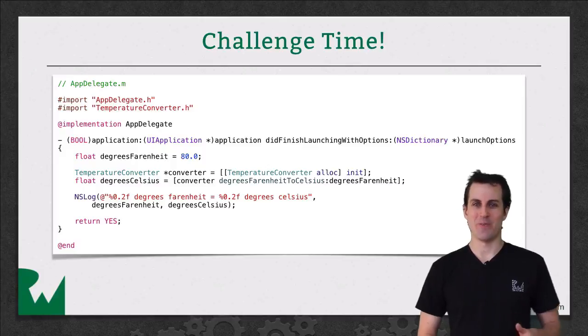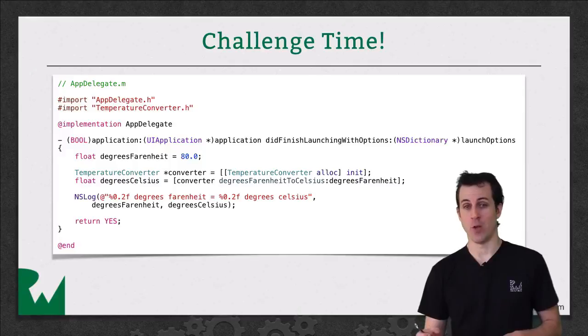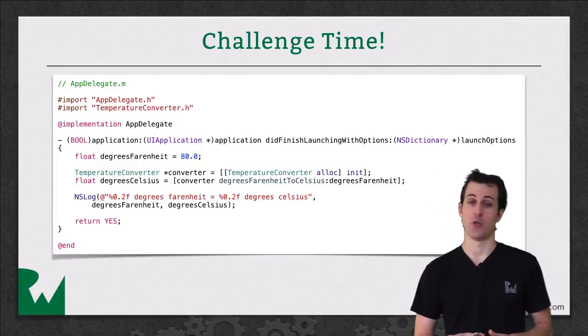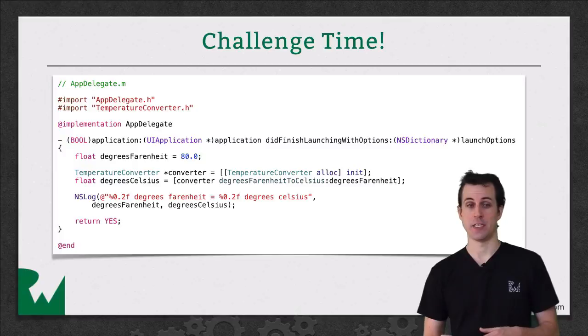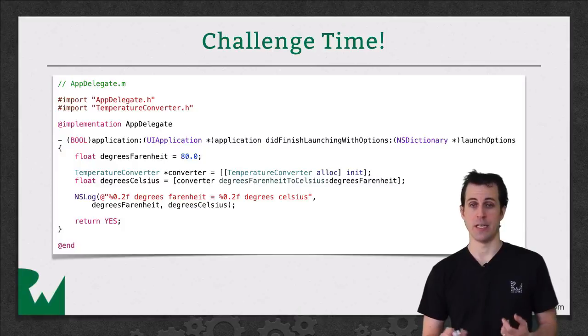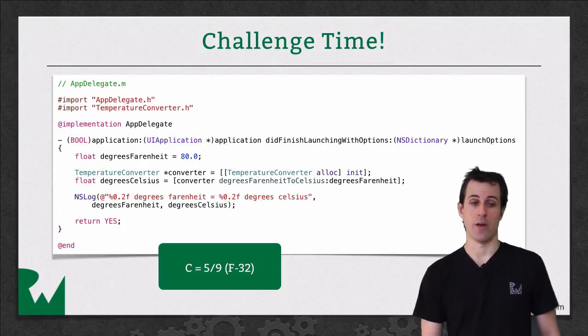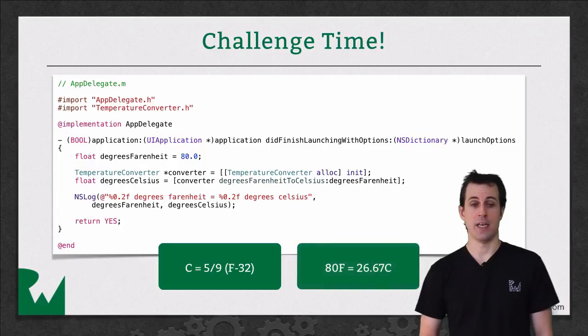All right. That's it for this video tutorial. But I want to leave you guys off with a challenge. So, what I want you to do is create a class called TemperatureConverter. And I want you to create a single method on it called degreesToFahrenheit. It should take a float of degrees Fahrenheit as a parameter and return a float, which is the converted degrees to Celsius. And then you can use this code that you see here. Put it in your application delegate to test out your method. So, you can see here it creates an instance of the temperature converter. It calls the degreesFahrenheitToCelsius, passing in a value of 80 degrees. And it should return the degrees Celsius. And then it logs out those two values.